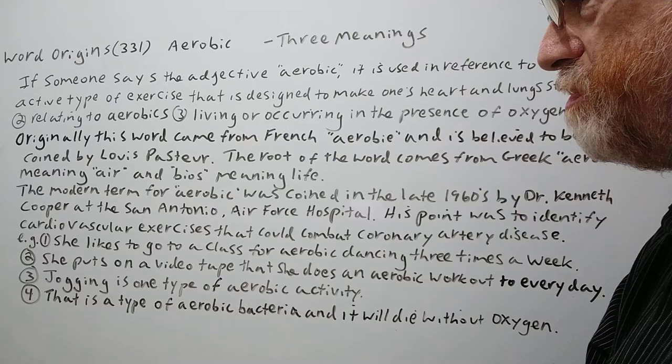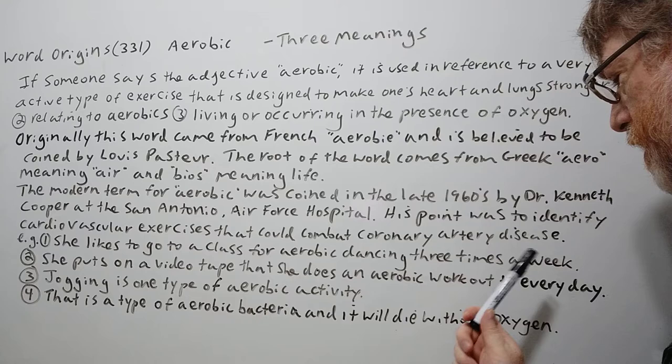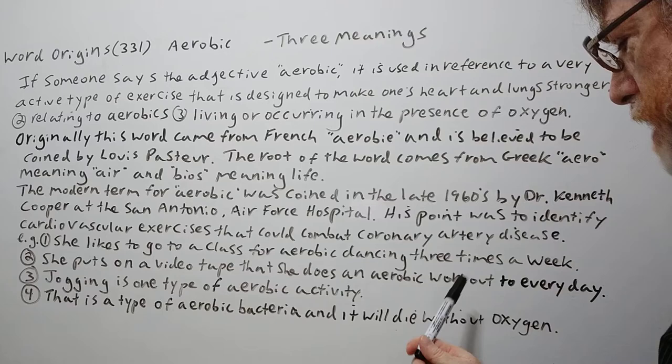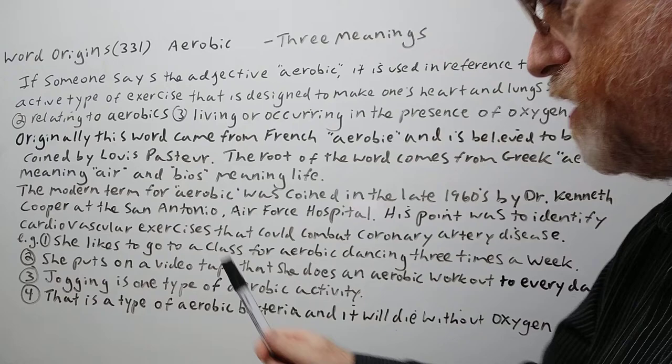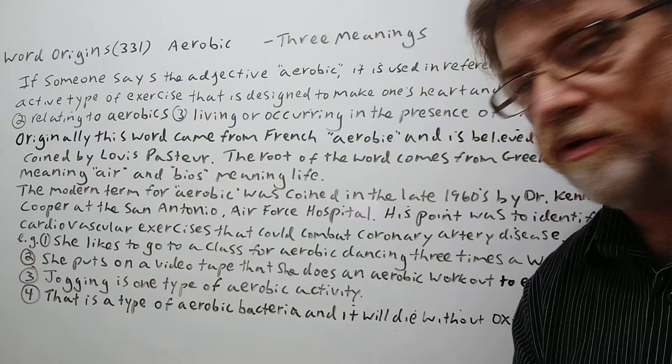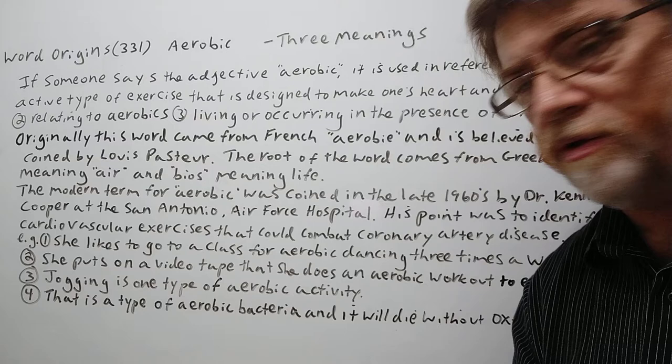Here are four examples showing how it's used. First: She likes to go to a class for aerobic dancing three times a week. Second: She puts on a videotape that she does an aerobic workout to every day — probably at home for half an hour or an hour. Third: Jogging is one type of aerobic activity. The last example is for the technical use: That is a type of aerobic bacteria and it will die without oxygen.